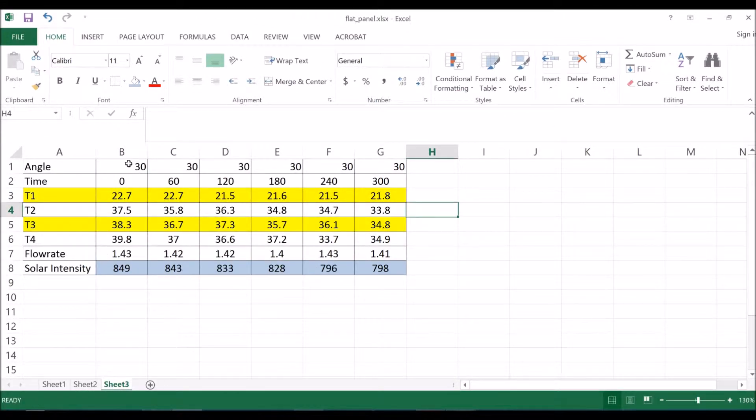We use an angle of 30 degrees, as you can see here, and every 60 seconds we were recording the temperatures of T1, T2, T3, and T4, and also the flow rate and the solar intensity.